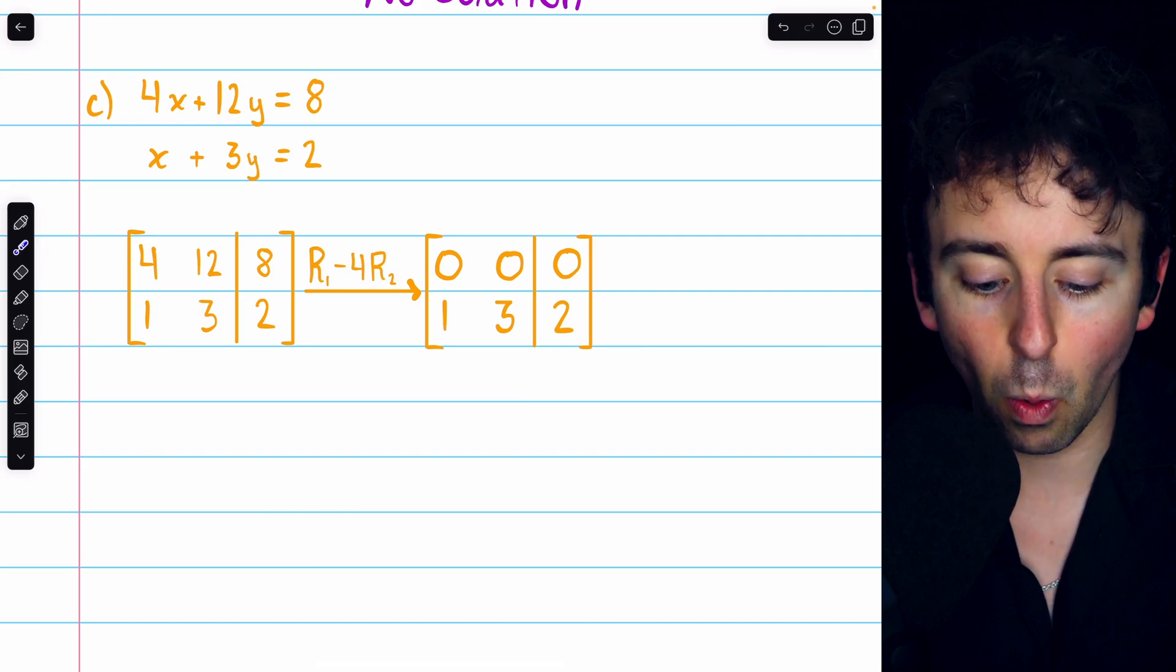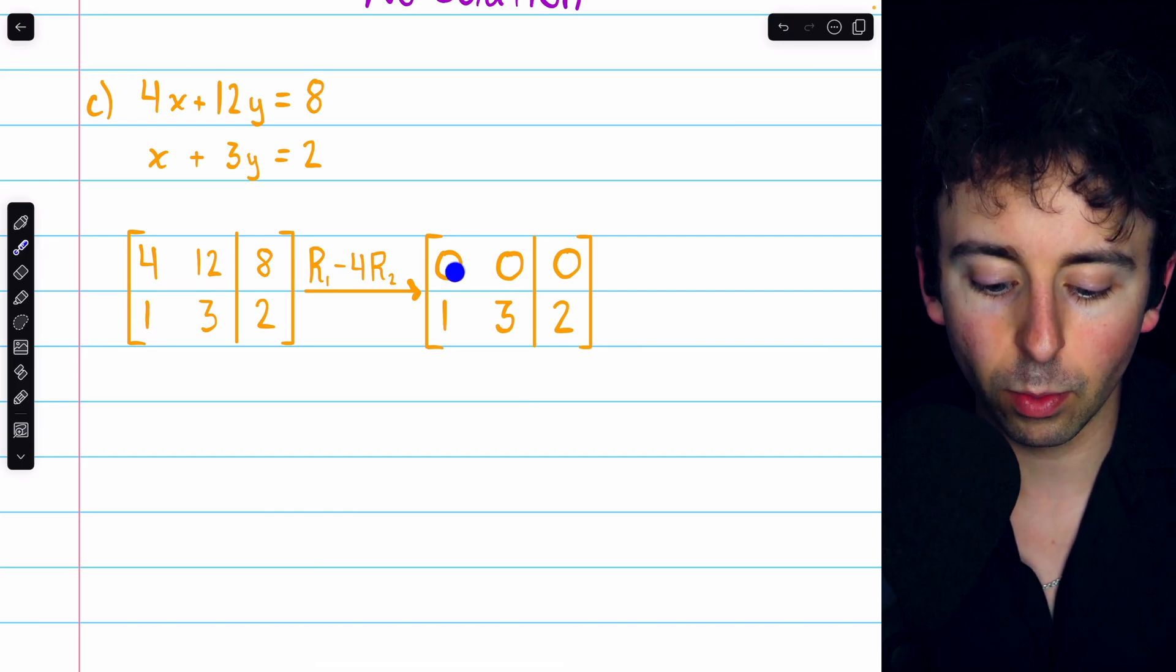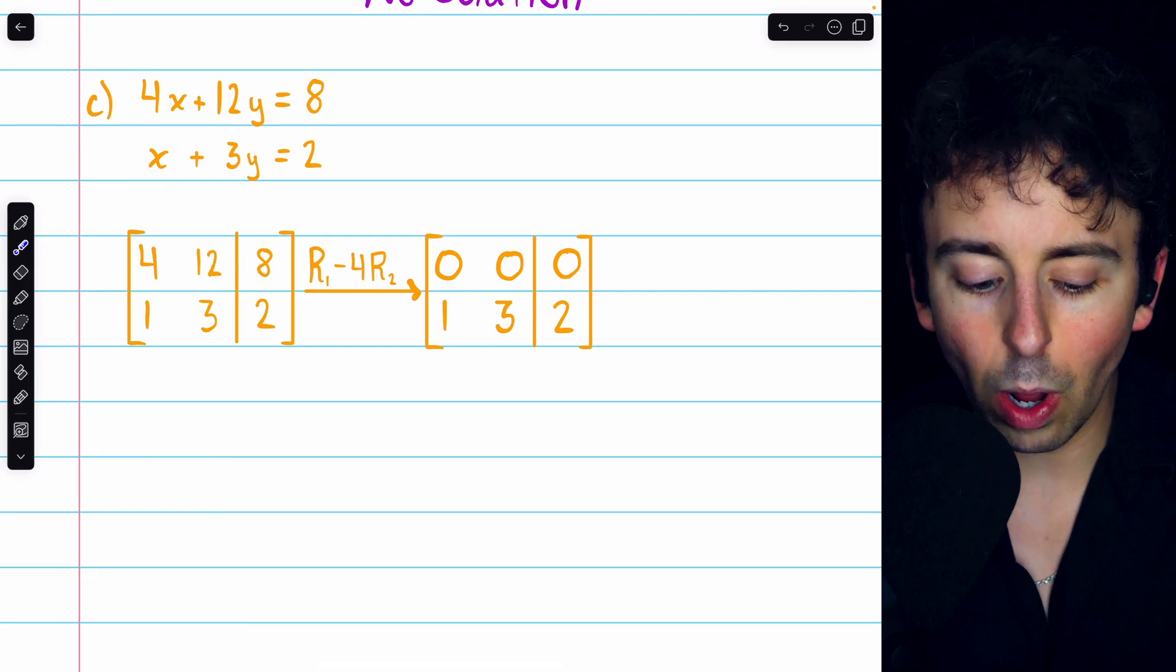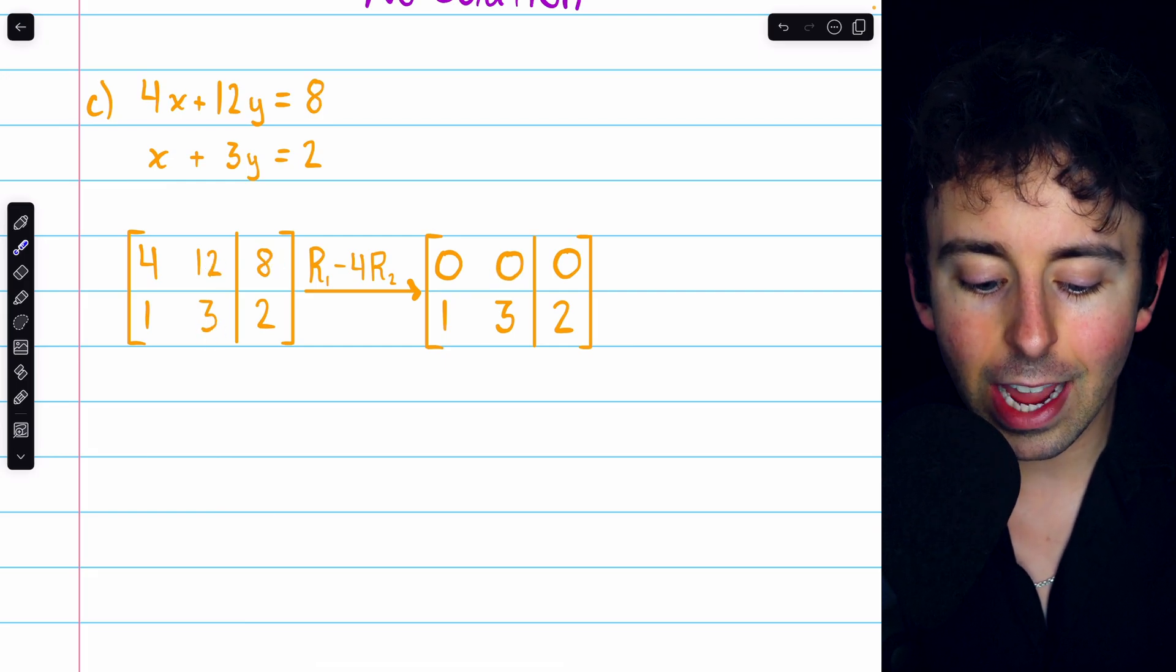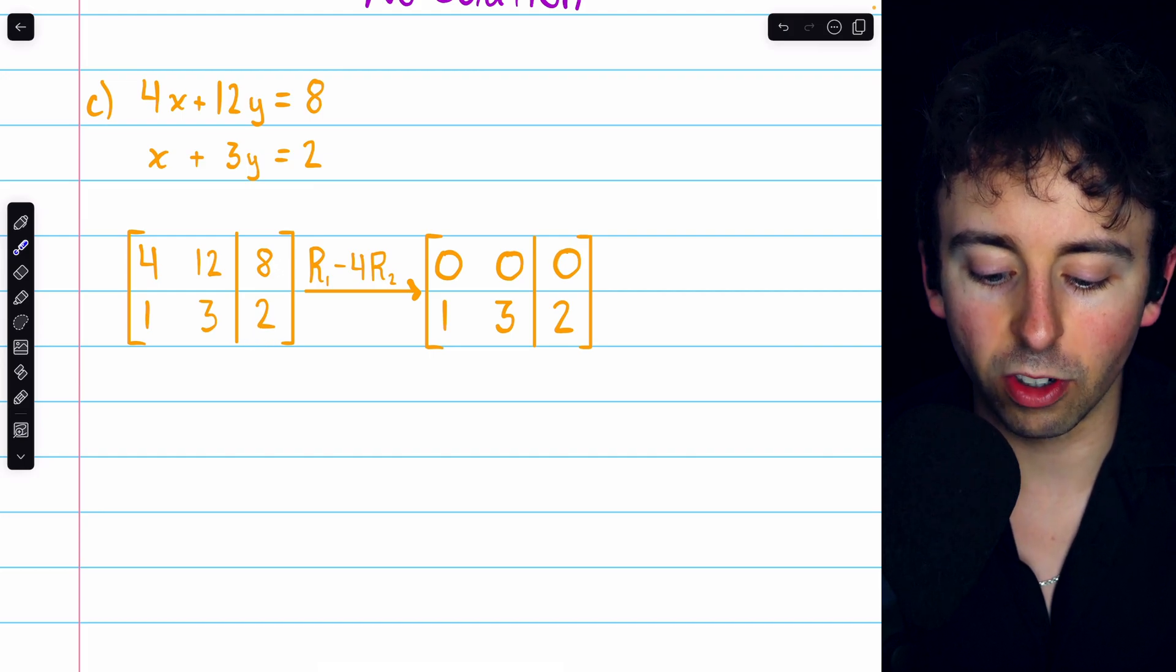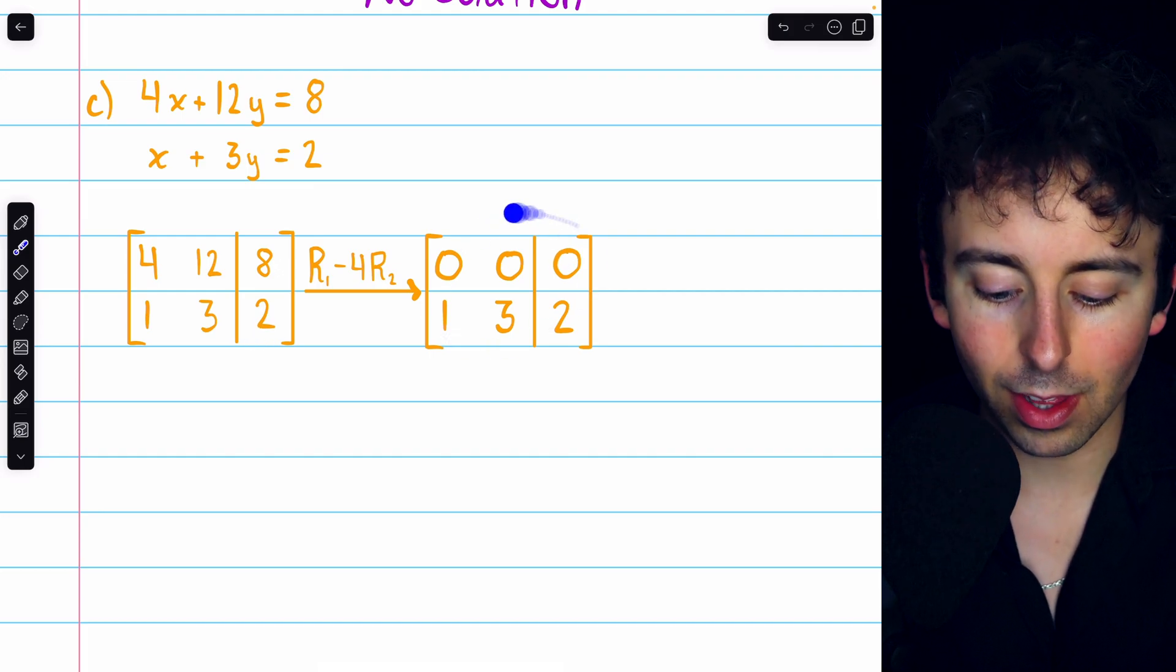Doing that, we would have 4 minus 4 times 1, which is 0, then 12 minus 4 times 3, which is 0, and then 8 minus 4 times 2, which is 0. We then arrive at this matrix.